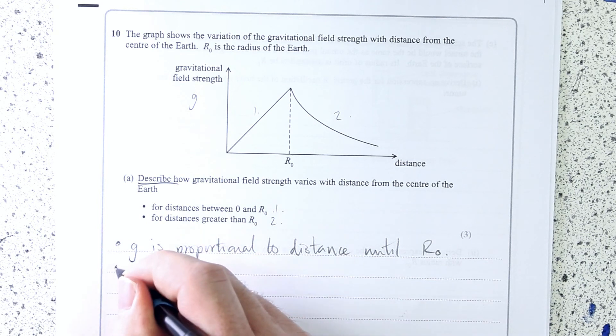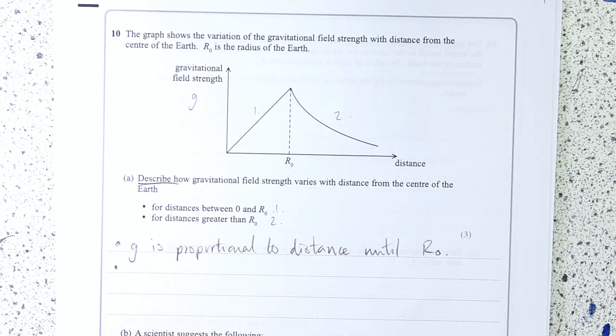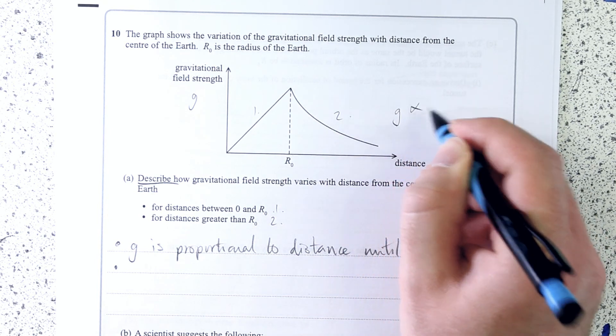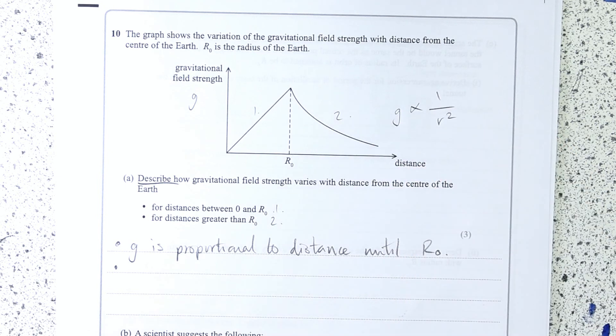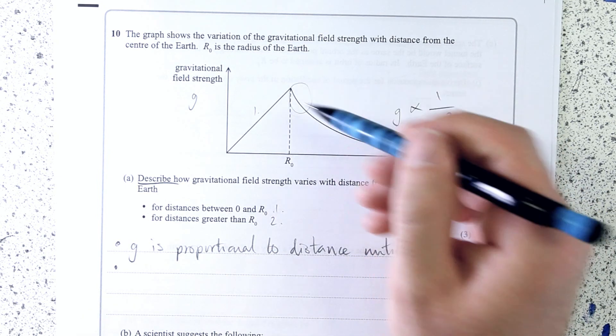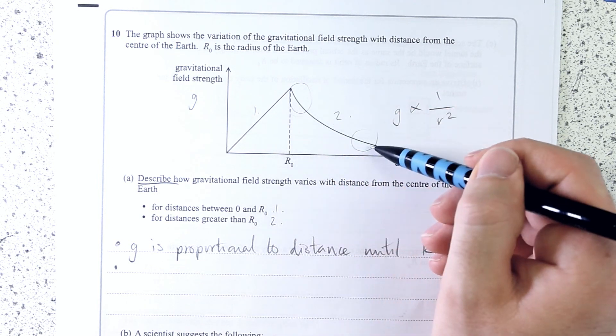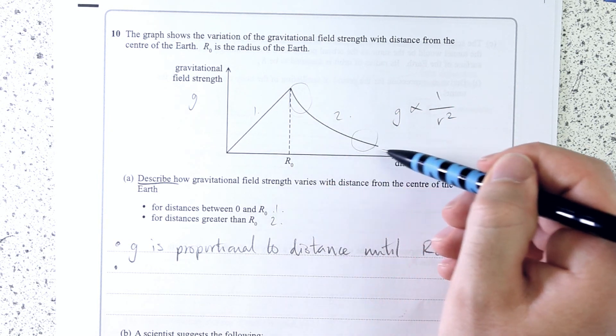And then after R₀, well, it's a curve, so there's an inverse relationship. What kind of inverse is it? Well, that is where a little bit of prior knowledge about gravitational fields or any radial field comes in handy. It's going to be varying with inverse square.